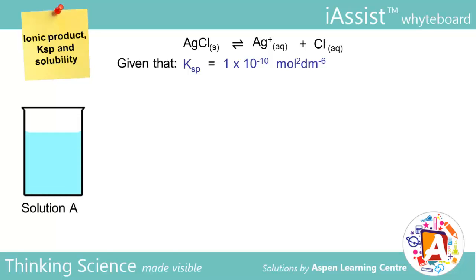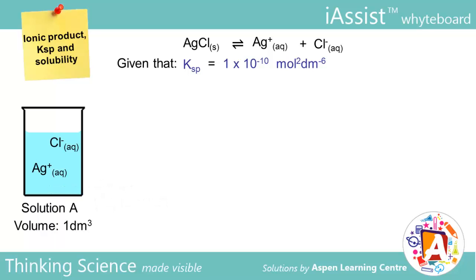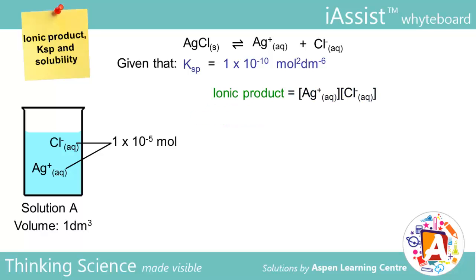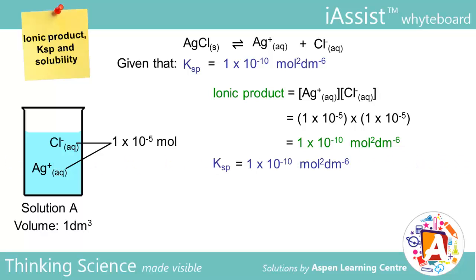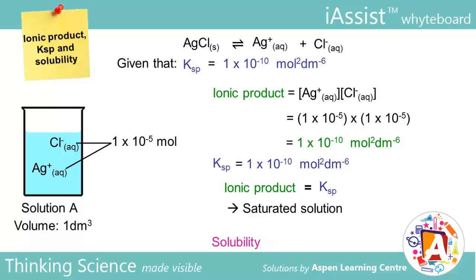Imagine solution A has a volume of 1 dm³. We put in 1×10⁻⁵ moles of AgCl solid. It will dissolve to give 1×10⁻⁵ moles of Ag⁺ ions and Cl⁻ ions respectively. The ionic product, which is the product of the concentration of ions at that instant, would be 1×10⁻¹⁰ mol² dm⁻⁶ — the same numerical value as Ksp. Since the ionic product equals Ksp, solution A is a saturated solution of AgCl. The solubility of AgCl in solution A is 1×10⁻⁵ mol dm⁻³, since all the salt dissolved to form a saturated solution.